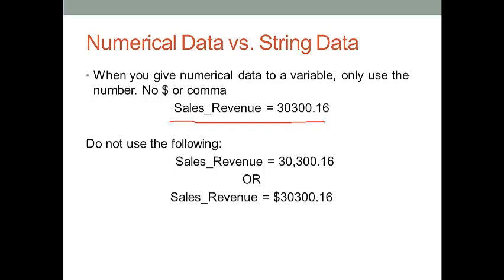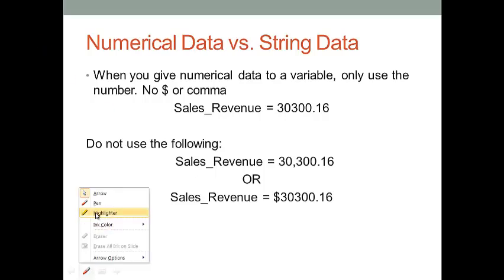However, if some classmates want to add a comma to separate the number, or add a dollar sign to indicate this is some value about money, these are considered as incorrect statements in Python.